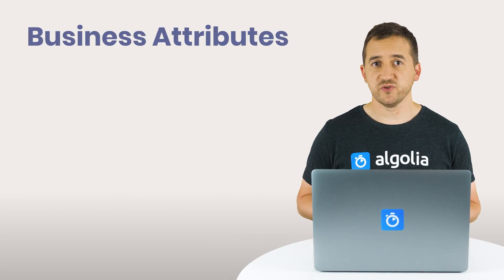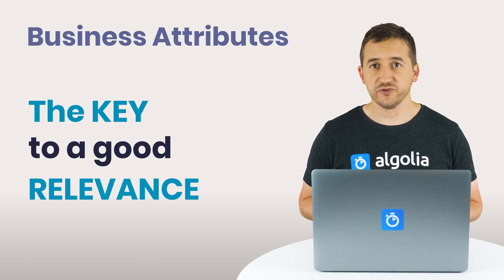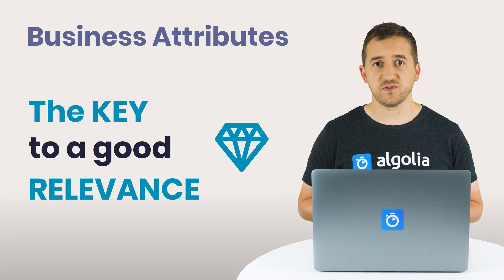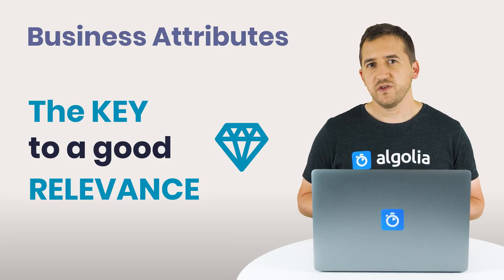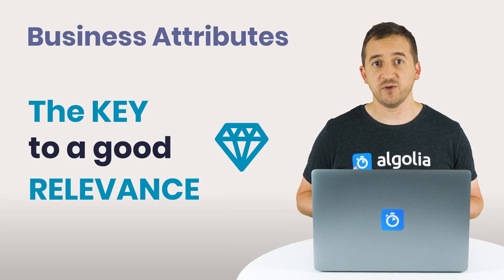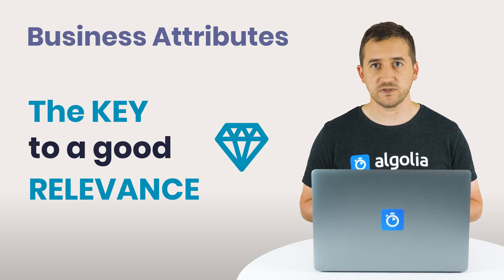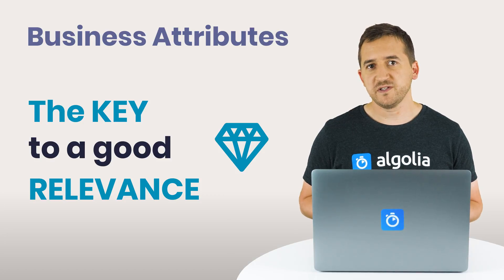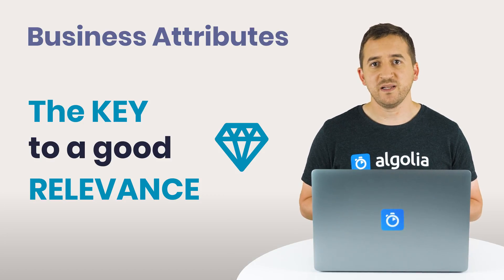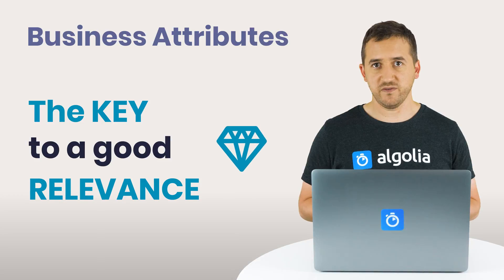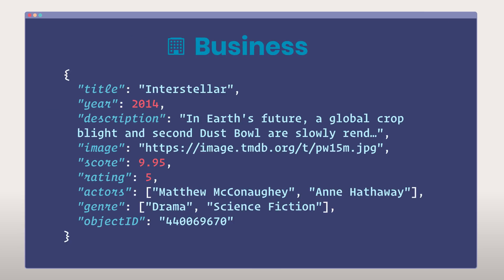Business metrics attributes are crucial to provide good relevance from the get-go, especially for as-you-type search experiences. This will allow the best results to come on top of the result set, even for empty queries or queries with only a couple of characters. For very specific queries, this is what enables the engine to promote the best records according to your business data when multiple results of equal textual relevance are found. In our example, this would be the score attribute.